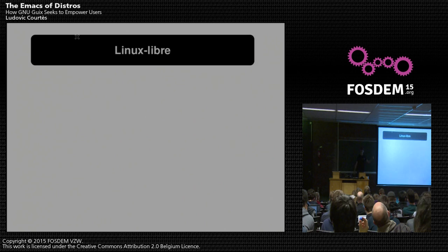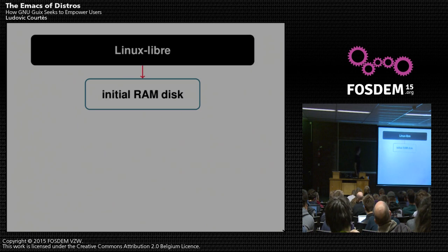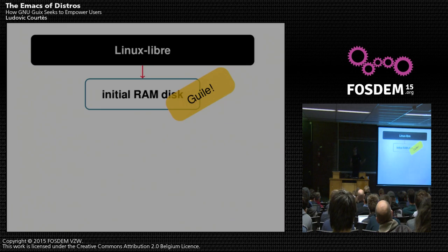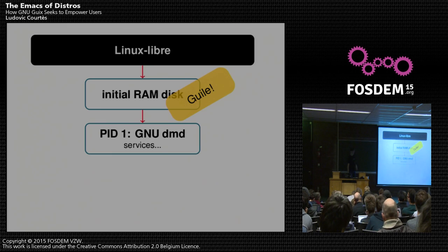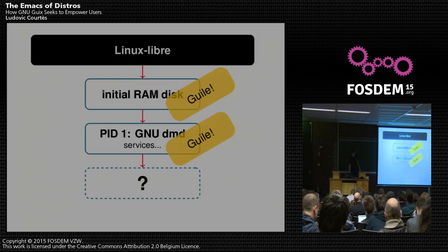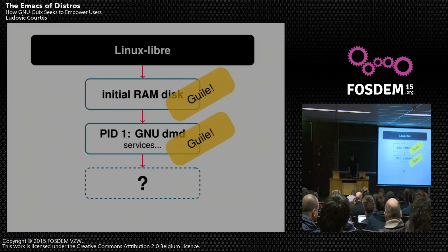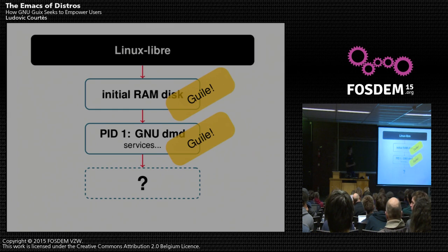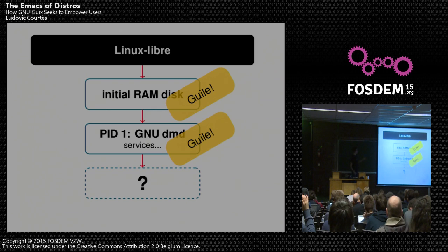To summarize what we have here: we have the kernel, and from there we have an initial ramdisk. It turns out we run Guile in the initial ramdisk, so we can use all our friendly Guile libraries within the ramdisk. From there we have PID1, which is DMD — and again, that's Guile. So again, we can reuse our friendly Scheme libraries within that daemon. There are some things like device mapping that you want to be able to do both in the initrd and at system initialization time from PID1, and so it's very useful to be able to reuse this kind of code.